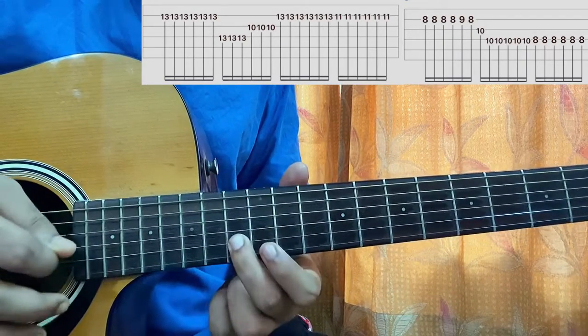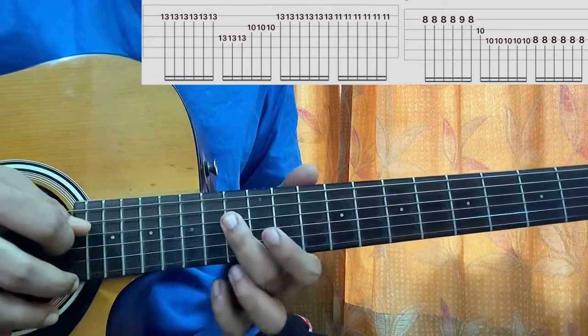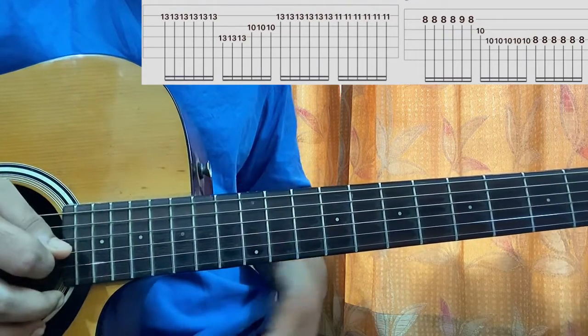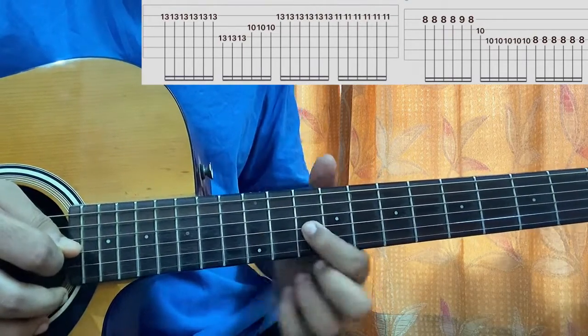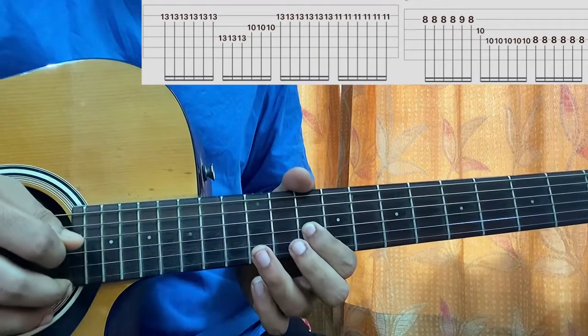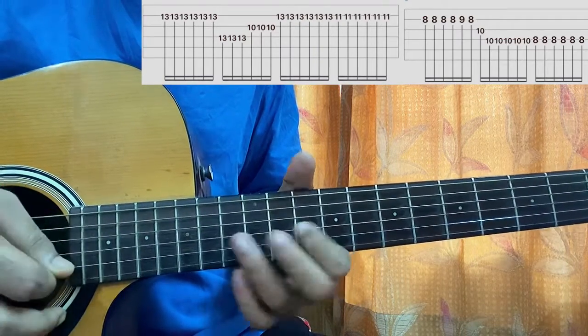So 1 2 3 4 5 6, then I'll play 13th fret on D string down down up, then I'll play 10th fret on the G string down down up, so we got...